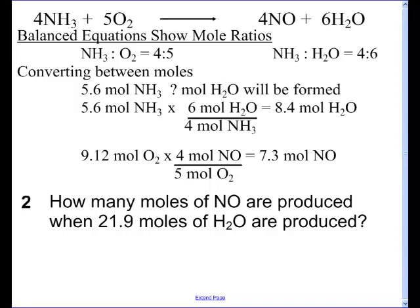And the way we read it is, if I look at the two coefficients between ammonia and oxygen, in this case it's 4 and a 5, I would say the ratio between ammonia and oxygen is 4 to 5. If I want to look at the ratio between ammonia and water, I would call it 4 to 6.